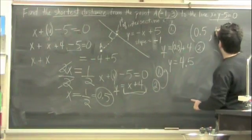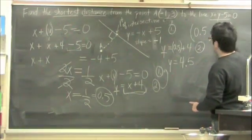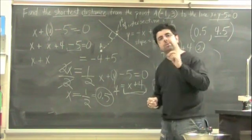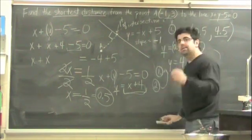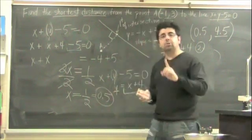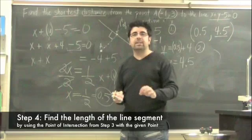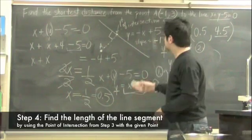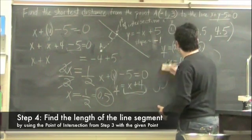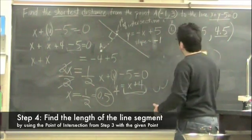That is at 0.5 and at 4.5. So now we have the two sets of points that we need to find the length of a line segment, or the length of the shortest distance. To do that, now we're looking at our final step, and that final step is use the length of a line segment equation. So we're going to erase all this.